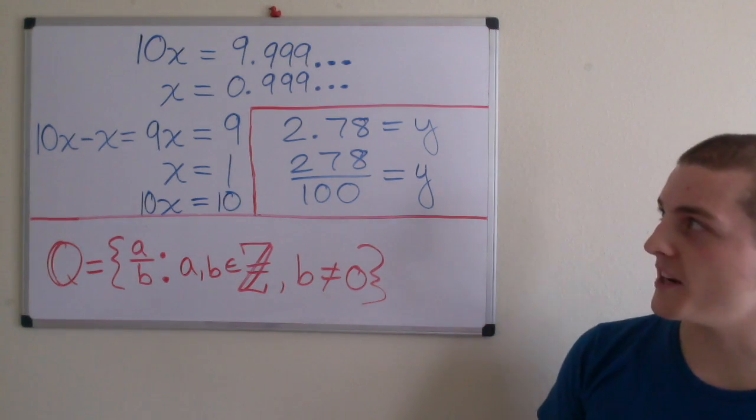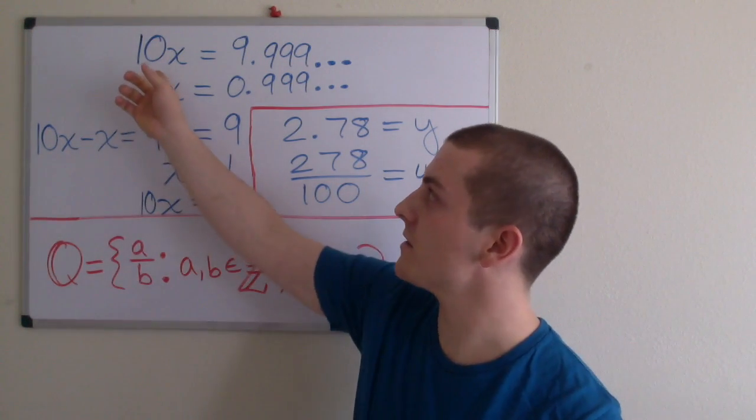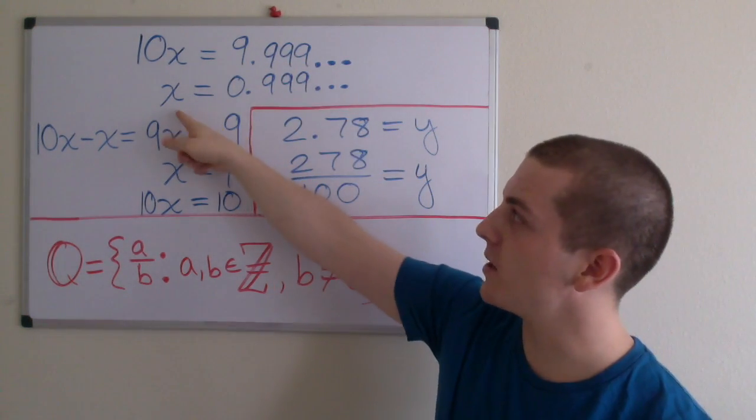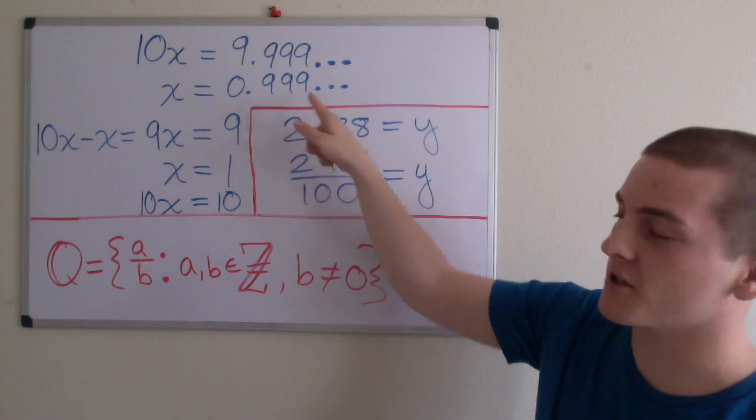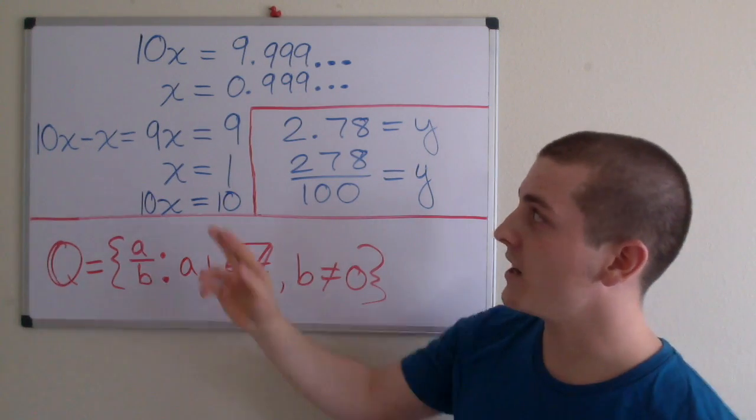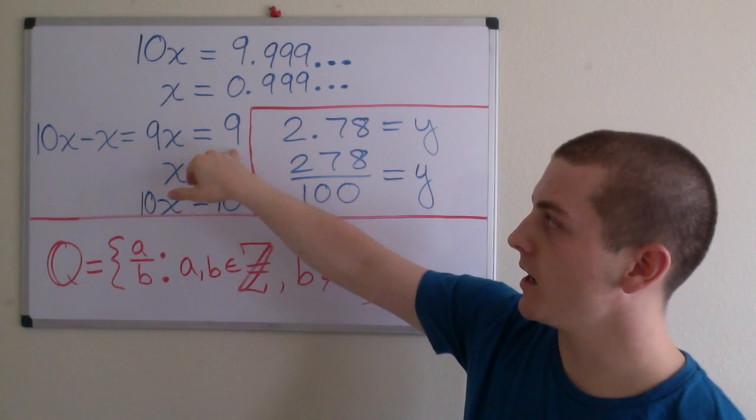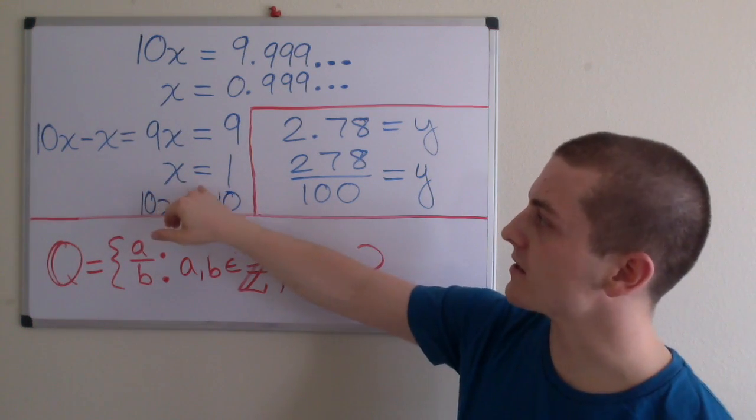Let's start with repeating decimals. If we let 10x equal 9.999 repeating, then if we divide both sides by 10, x equals 0.999 repeating. If we subtract x from 10x, we have 9x equals 9, and dividing both sides by 9, we have x equals 1.